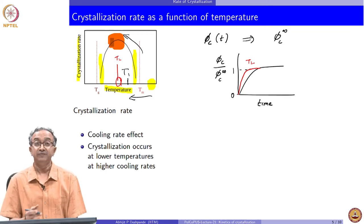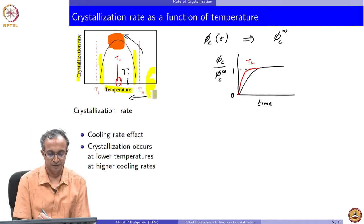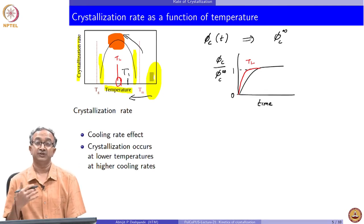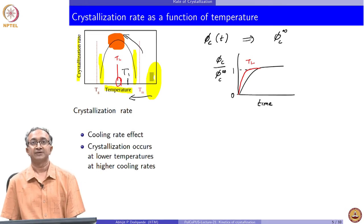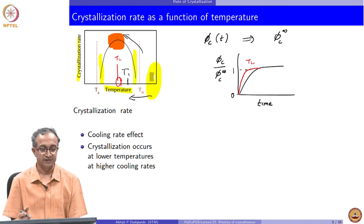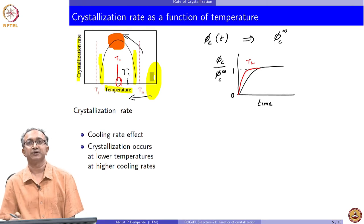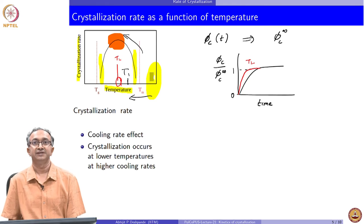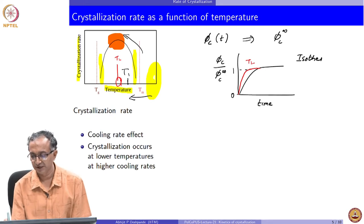In practical applications, the sample is taken to above the melting point so that it can flow in a mold or cast. Then, as soon as mold filling finishes, the mold is cooled and the temperature decreases at some rate. In practical applications therefore, crystallization will happen at different temperatures as the sample is being cooled, so what we discussed before is an example of isothermal crystallization.